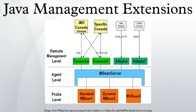Java Management Extensions is a Java technology that supplies tools for managing and monitoring applications, system objects, devices and service-oriented networks. Those resources are represented by objects called MBeans. In the API, classes can be dynamically loaded and instantiated.